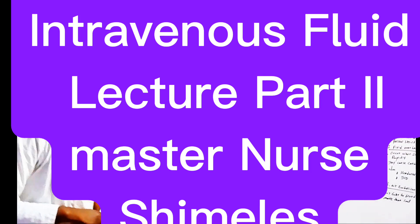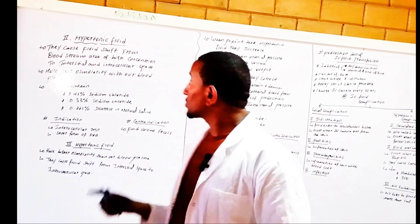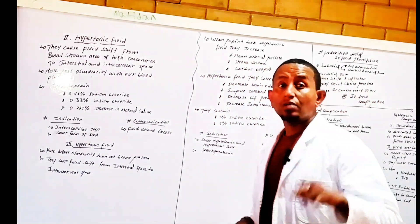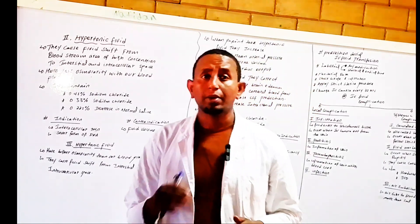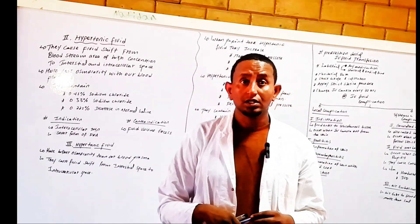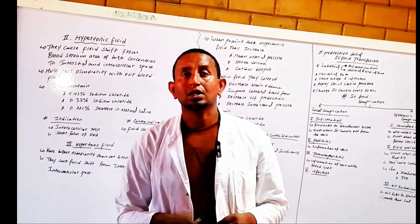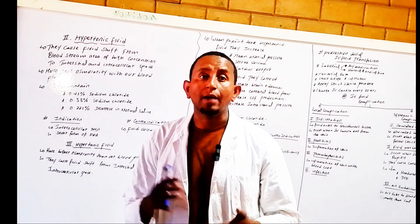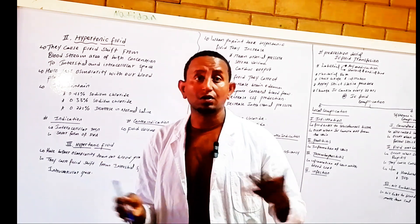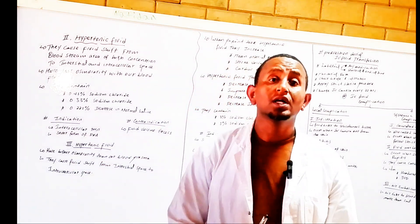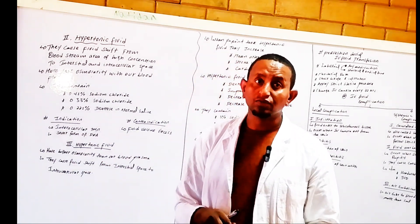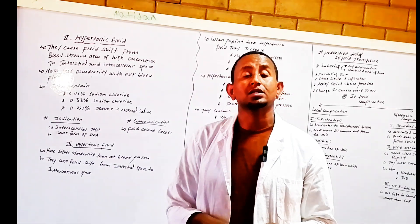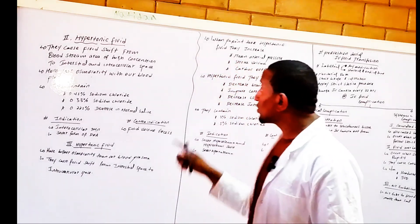Welcome to the second lecture on fluid and electrolyte abnormality and types of IV fluid. In the previous video, we covered types of IV fluid — specifically crystalline fluid and isotonic fluid. Isotonic fluids include normal saline, Ringer's lactate, and dextrose normal saline.